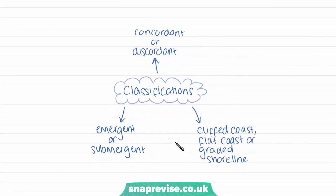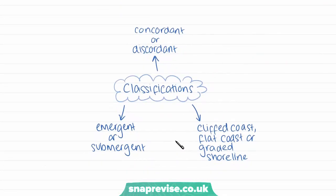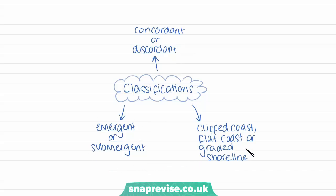We also have different classifications of coastlines. Coastlines can be classified as concordant or discordant — we just need to know those names. They can be emergent or submergent, and we can also have cliffed coasts, flat coasts, or graded shorelines. There are other factors we'll be learning about in different videos, but we don't need to know much about them right now.